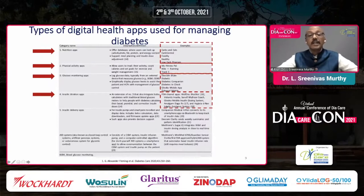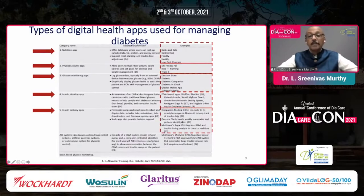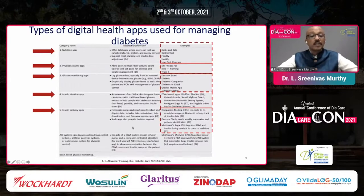Blue Star is an FDA-cleared app. Insulin delivery apps include Companion Medical InPen, which connects to a smartphone via Bluetooth to track insulin data. Dexcom Clarity sends weekly summaries and pattern identification to healthcare individuals. Medtronics Sugar IQ integrates blood glucose monitoring and insulin dosing analysis in close to real-time. These are all apps available for real-time clinical practice.